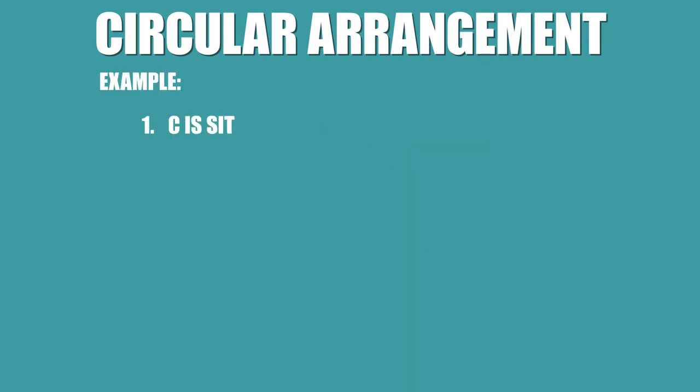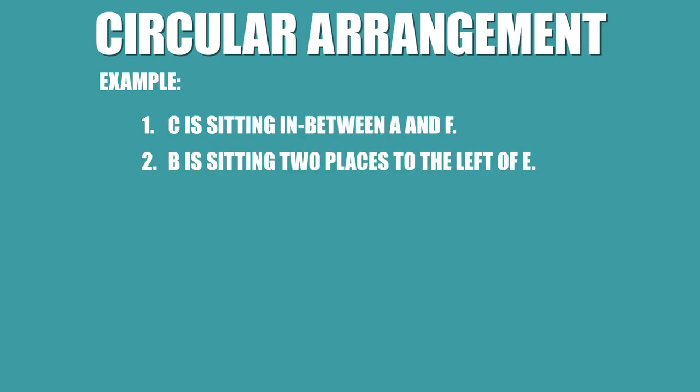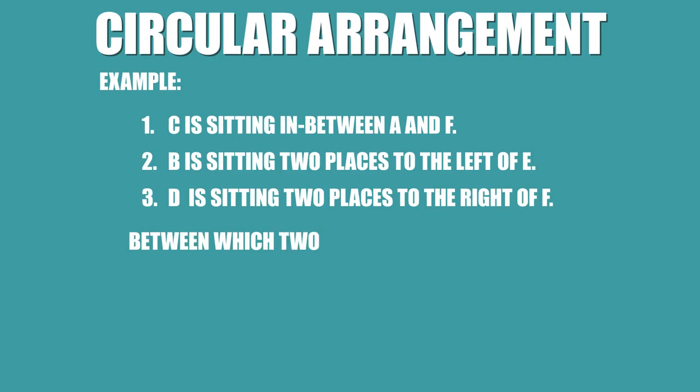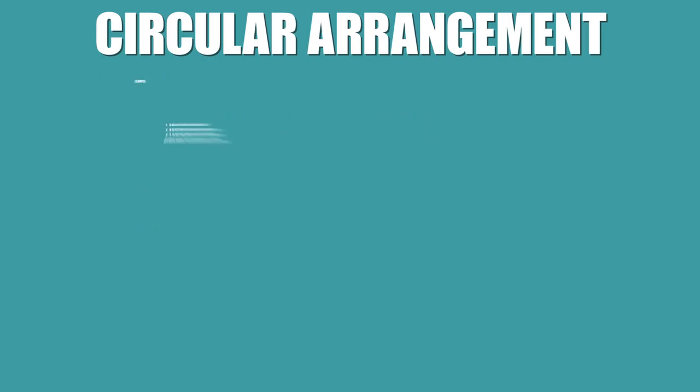C is sitting in between A and F. B is sitting two places to the left of E. D is sitting two places to the right of F. Between which two persons is D sitting?